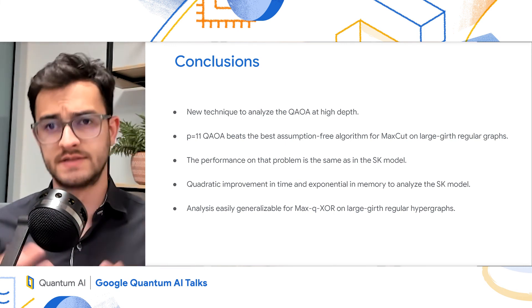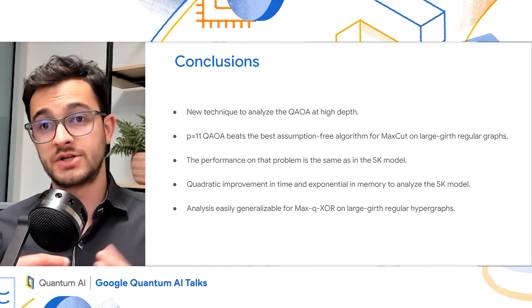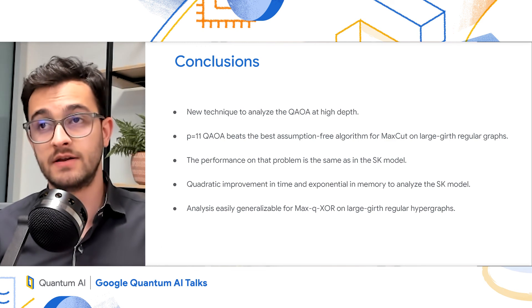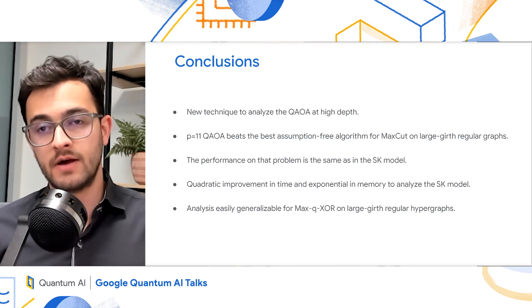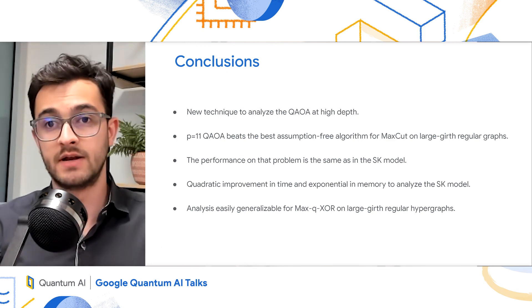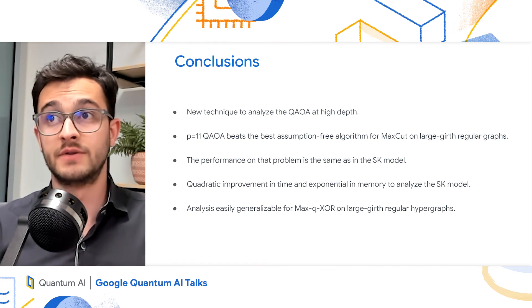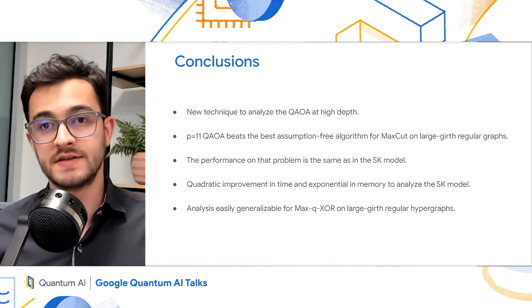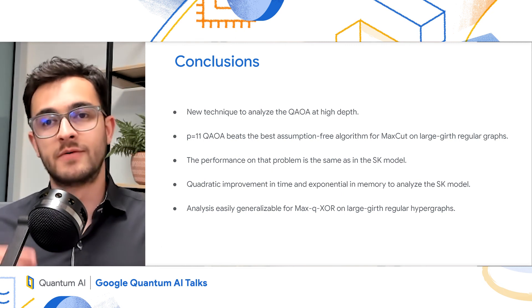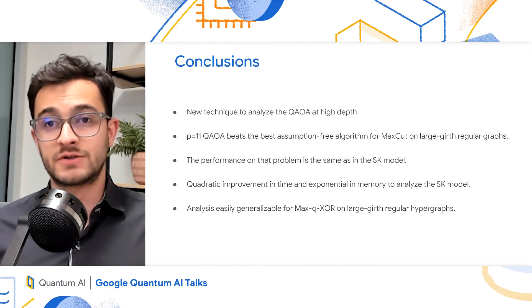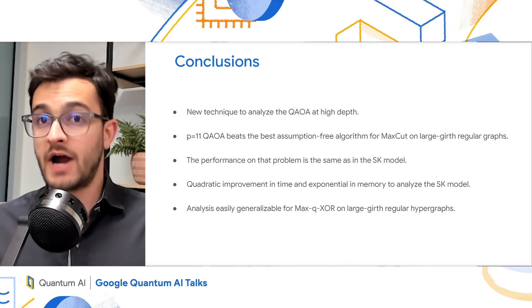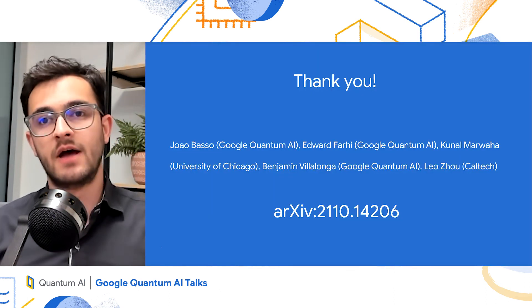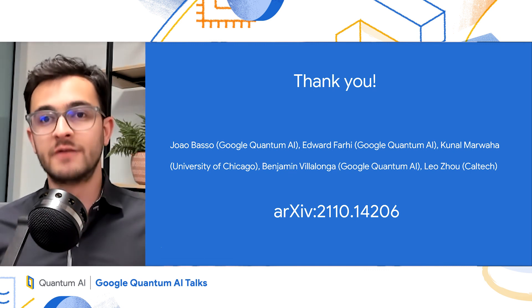And as a consequence, our iteration is actually a quadratic improvement in time and an exponential improvement in memory when compared to the previous iteration that computed the performance of the QAOA on the SK model. And we also showed that we can easily generalize the iteration to compute the performance of the QAOA on the Max-Q-XOR problem for large-girth regular hypergraphs. And with that, I'd like to thank my co-authors and thank you very much for listening.